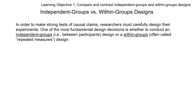We talked about independent groups in the last lecture, but now what is the main difference between independent groups and within groups? In order to make the strong test of causal claims, researchers must carefully design their experiments. One of the most fundamental design decisions is whether to use independent groups between participants, like we talked about last week, or within groups — often called repeated measures — but there are actually various different within groups designs.